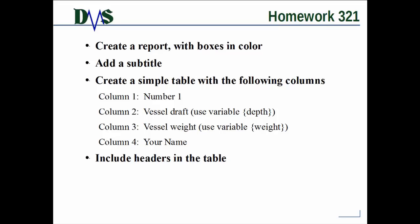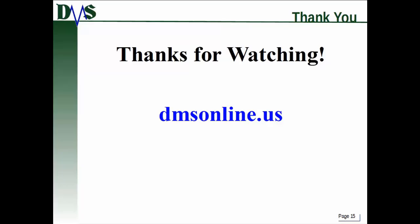And column number 1 is just going to be number 1. And then column number 2 is going to be the vessel draft. Now you don't know what that is, so you have to use one of the GHS built-in variables. That variable is depth. And then column number 3 is the vessel weight. Same case there. You have to use a built-in variable, which is weight. And then for column number 4, just write out your name. So every single time you write out a row here, your name should be in the last column. And, of course, we have provided an example solution to this.